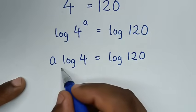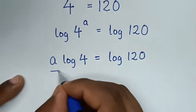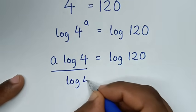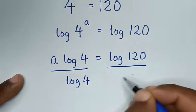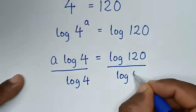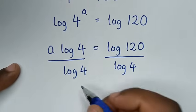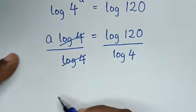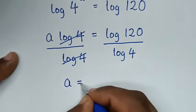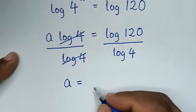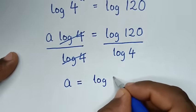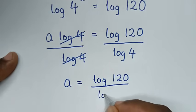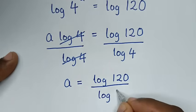Then we'll divide by log of 4 on both sides — log of 4 over log of 4 on the left, and log of 120 over log of 4 on the right. This log of 4 will cancel, giving us a is equal to log of 120 over log of 4.